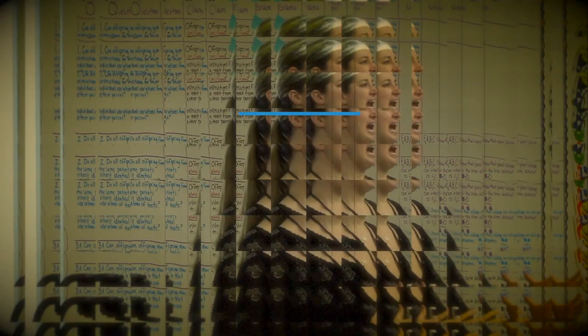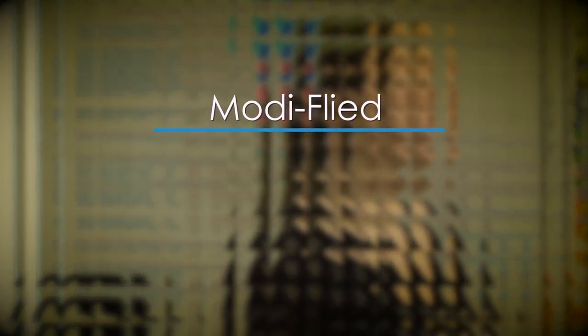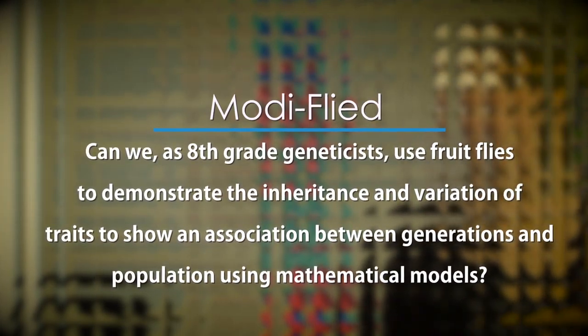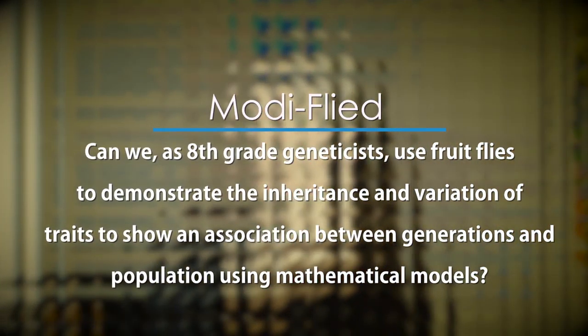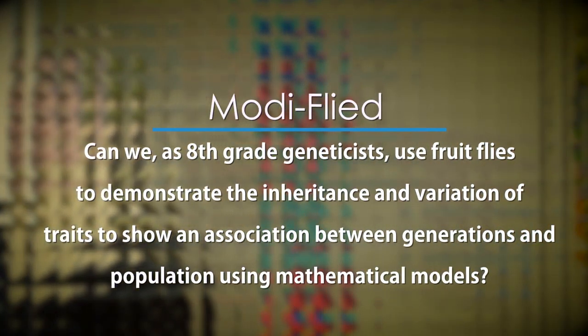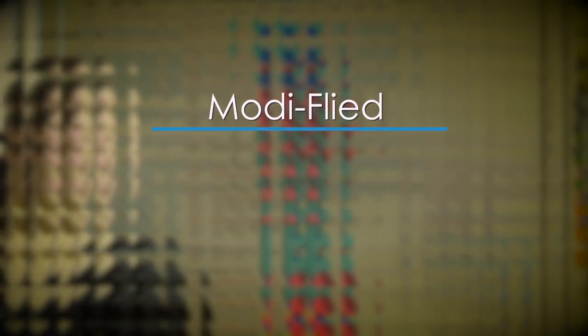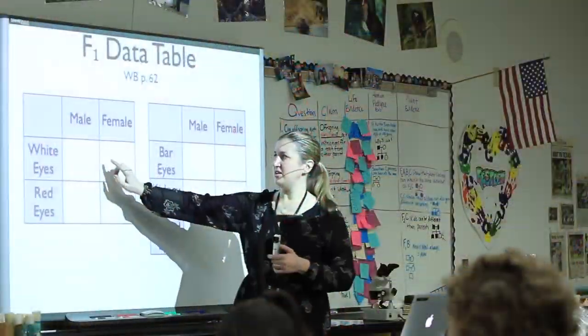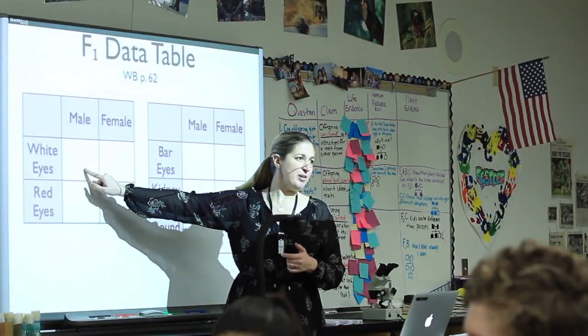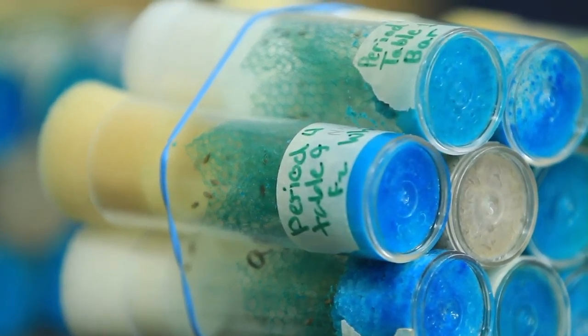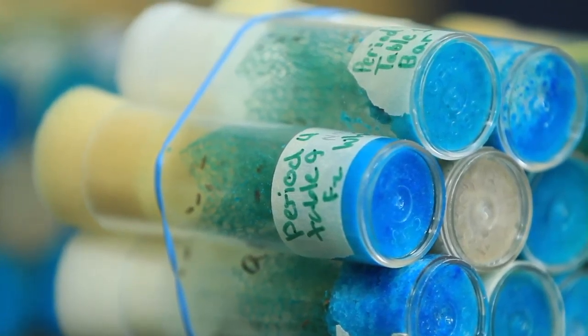Your job is to start tallying fruit flies. You're going to tally how many, take note if the fly has red or white eyes, and then take note if it's a male or female. If you have a male with white eyes, you tally it.